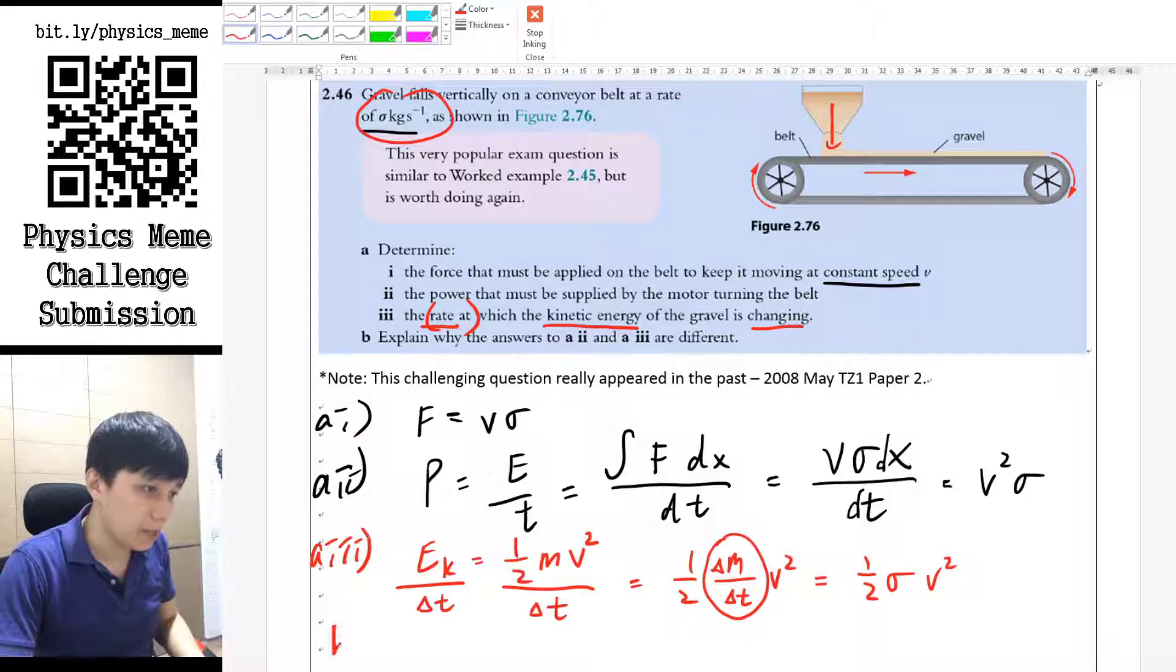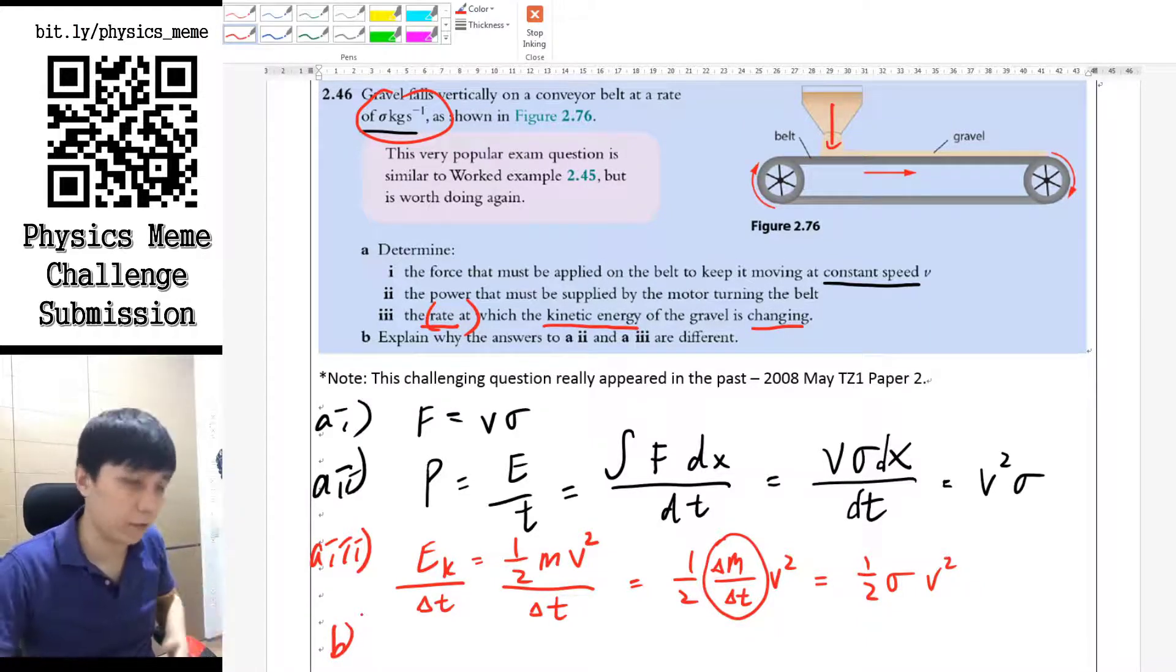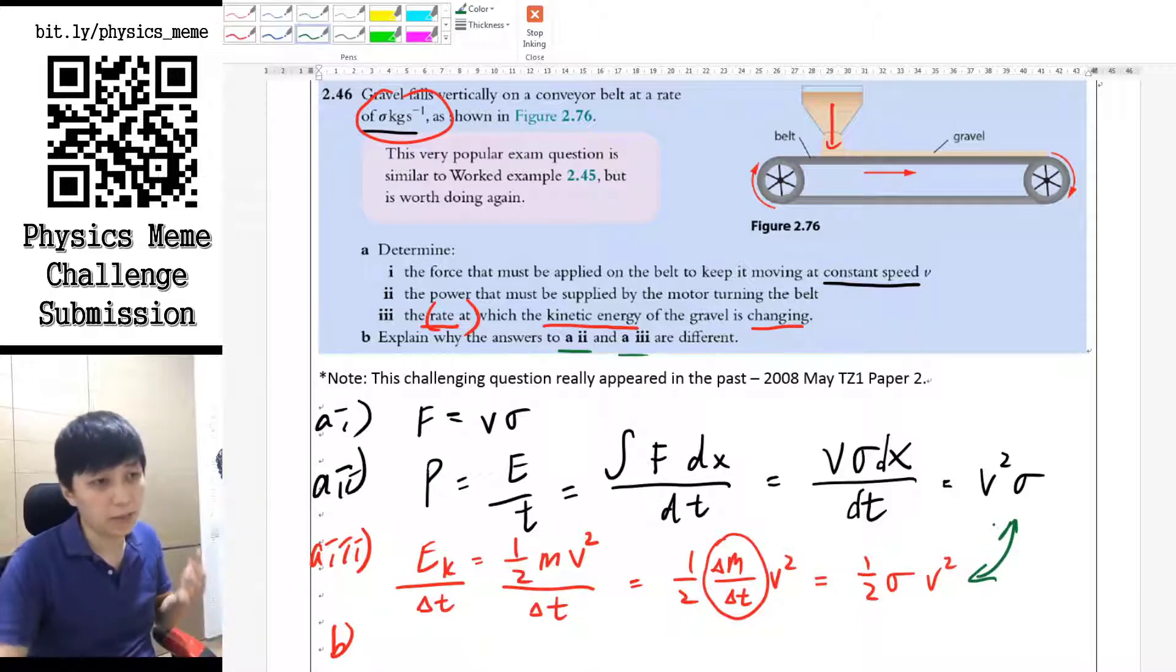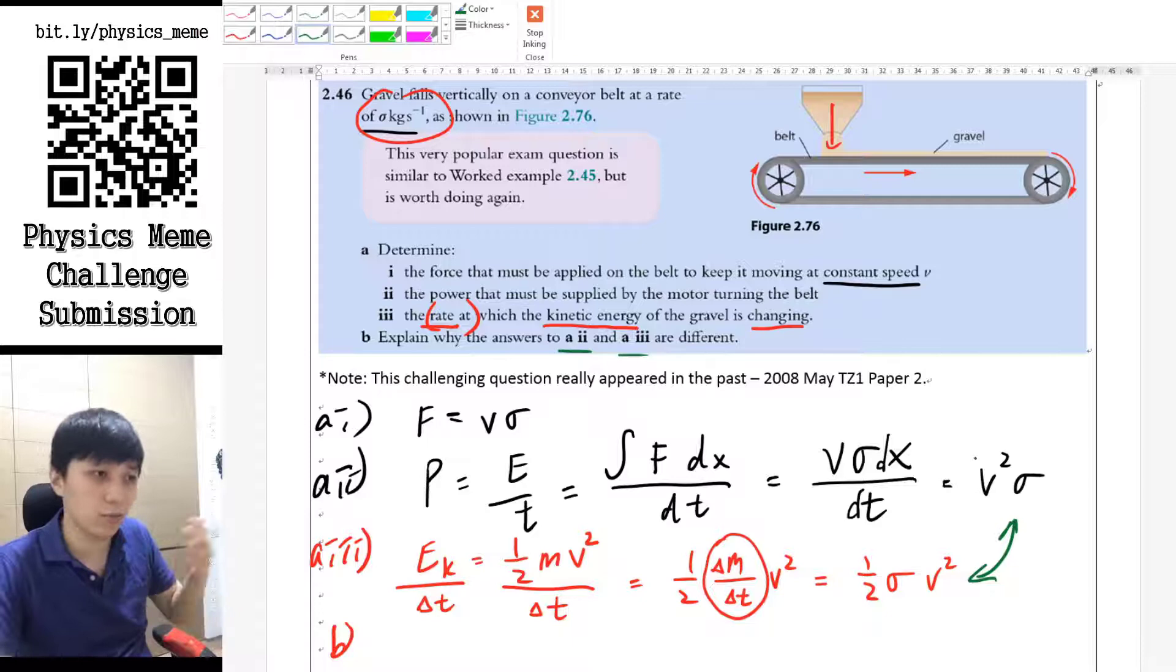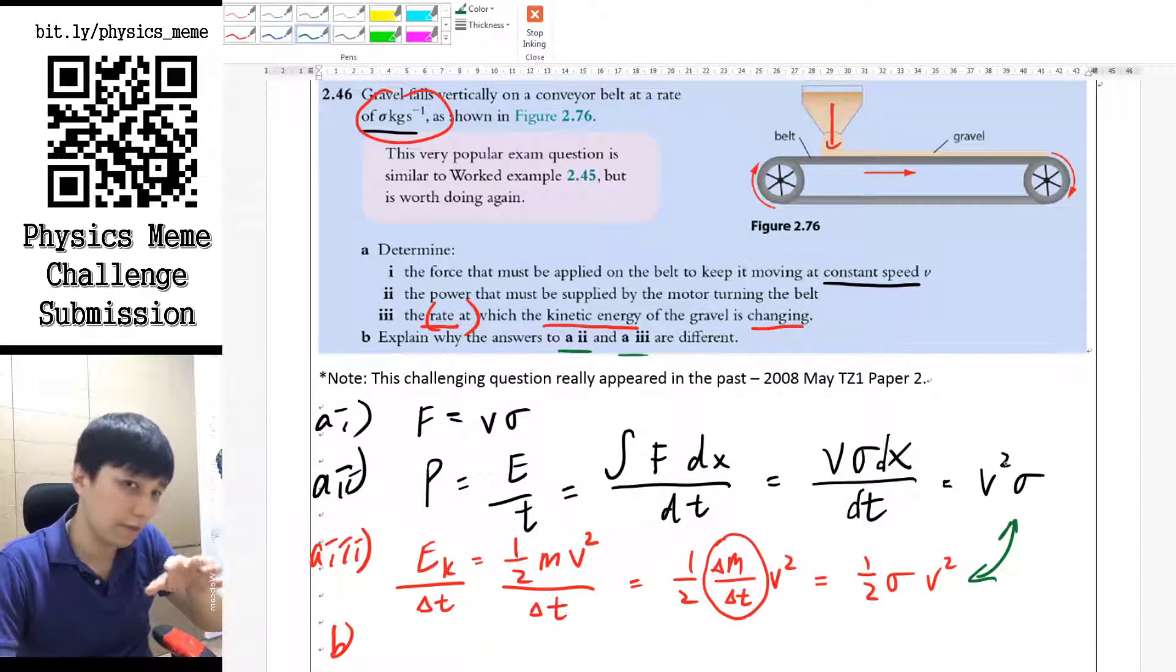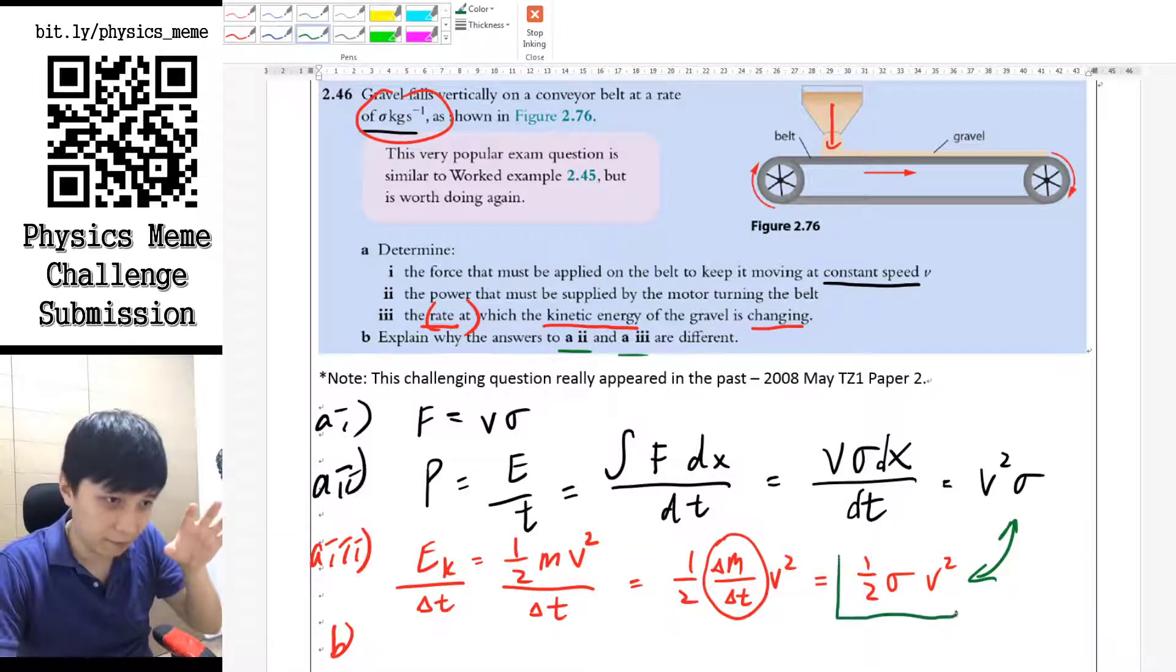And so for part b, this is the best part, the most interesting part of this question. If you look at the difference between the answer in these two parts, you will see they are not the same, right? Because part two is energy, or more precisely the power that you have given in to the conveyor belt.